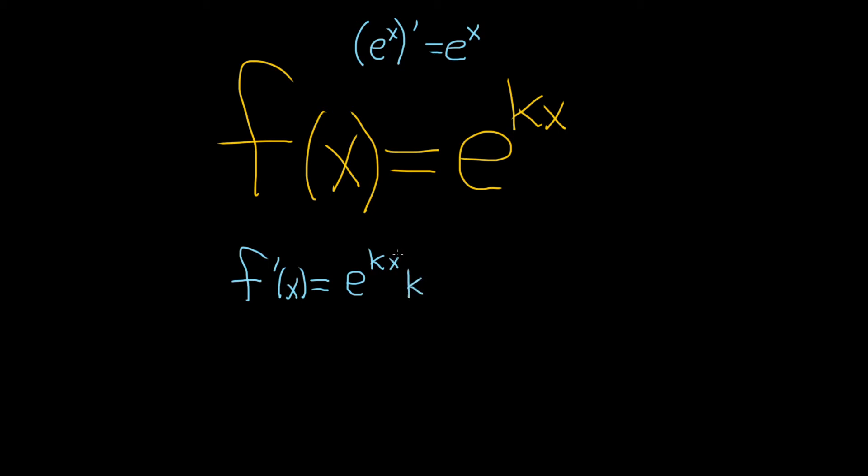So the derivative of kx is just k. The reason is, the derivative of x is 1, so you just get k times 1, so you get k. It's like if it was 2x, you would get 2. If it's 3x, you get 3. Because it's kx, you get k.